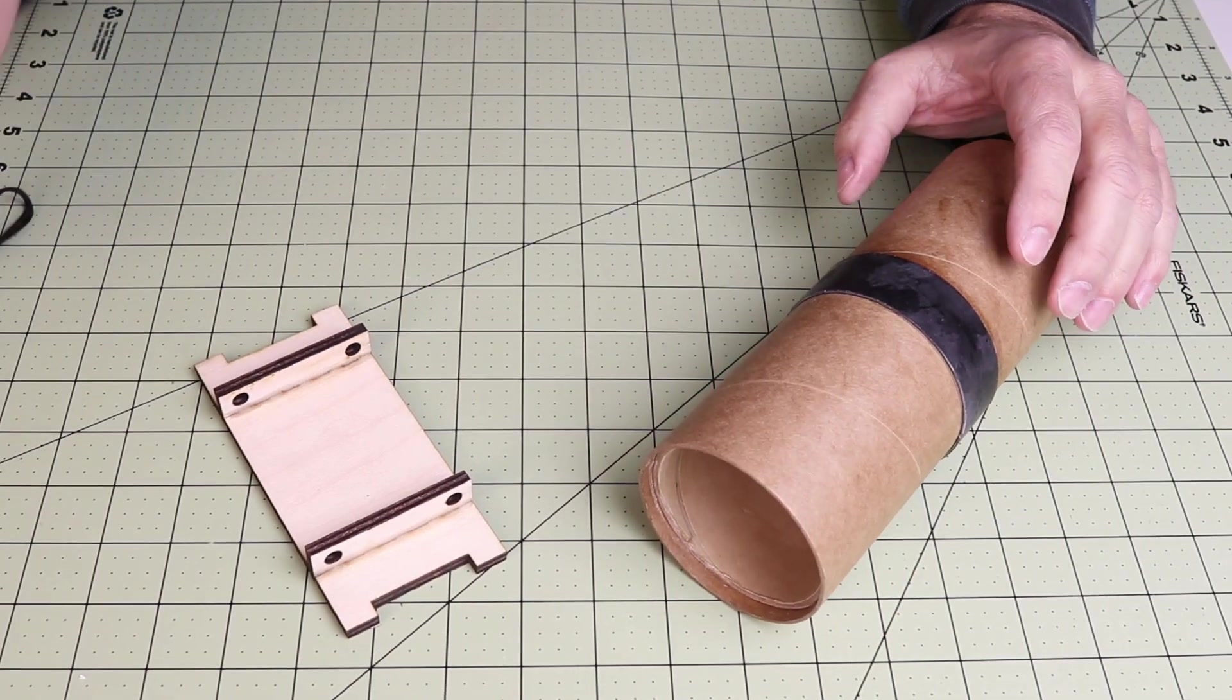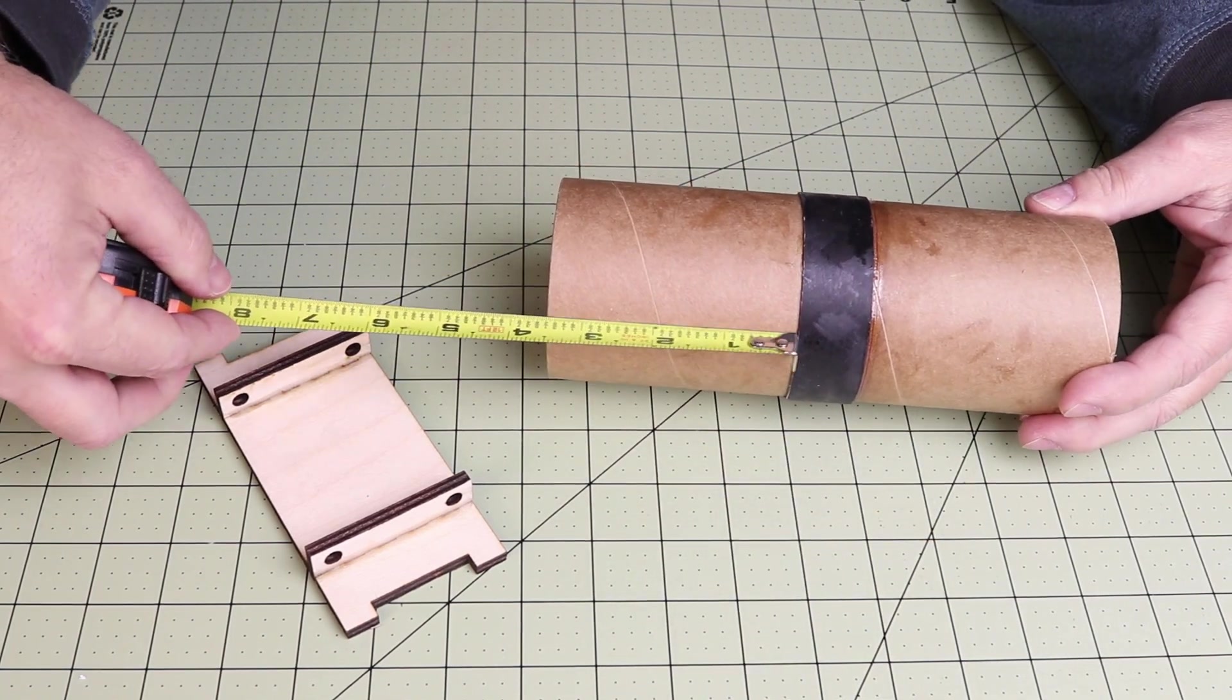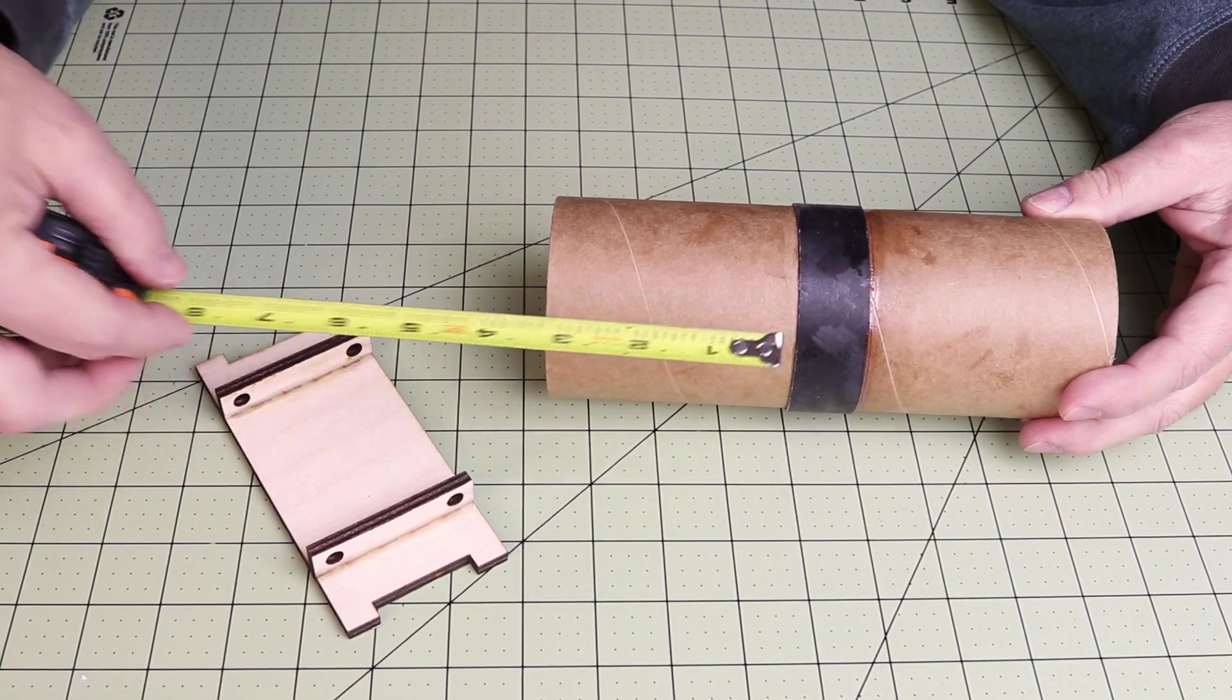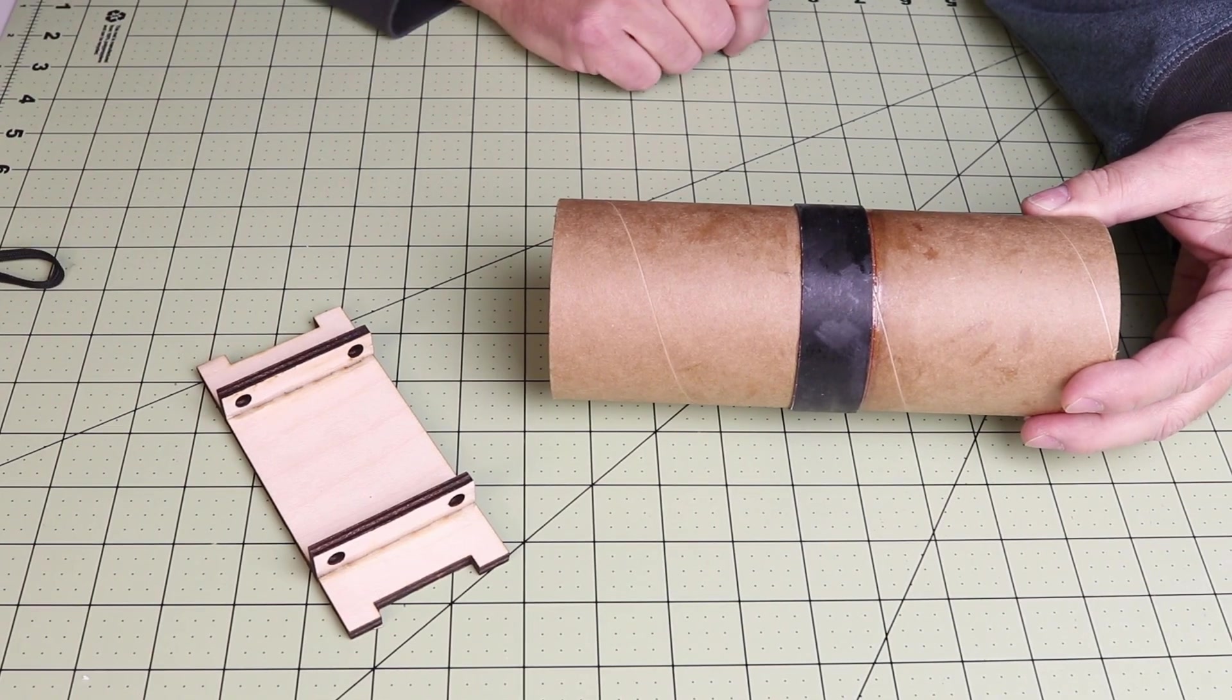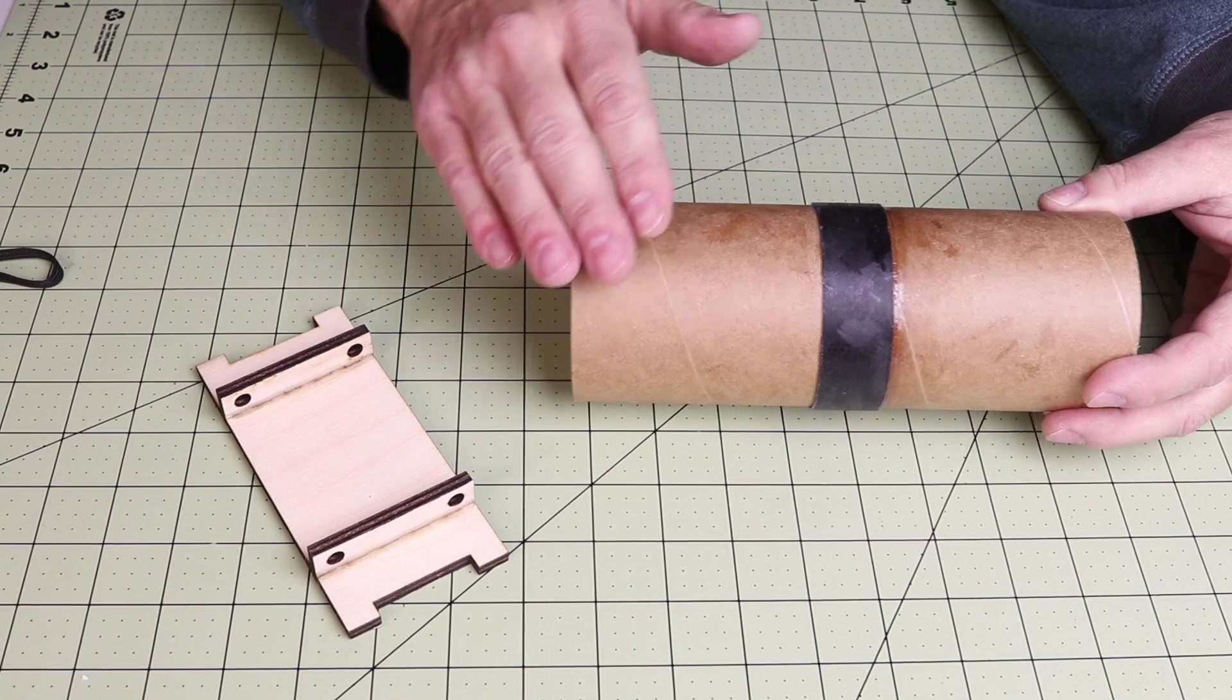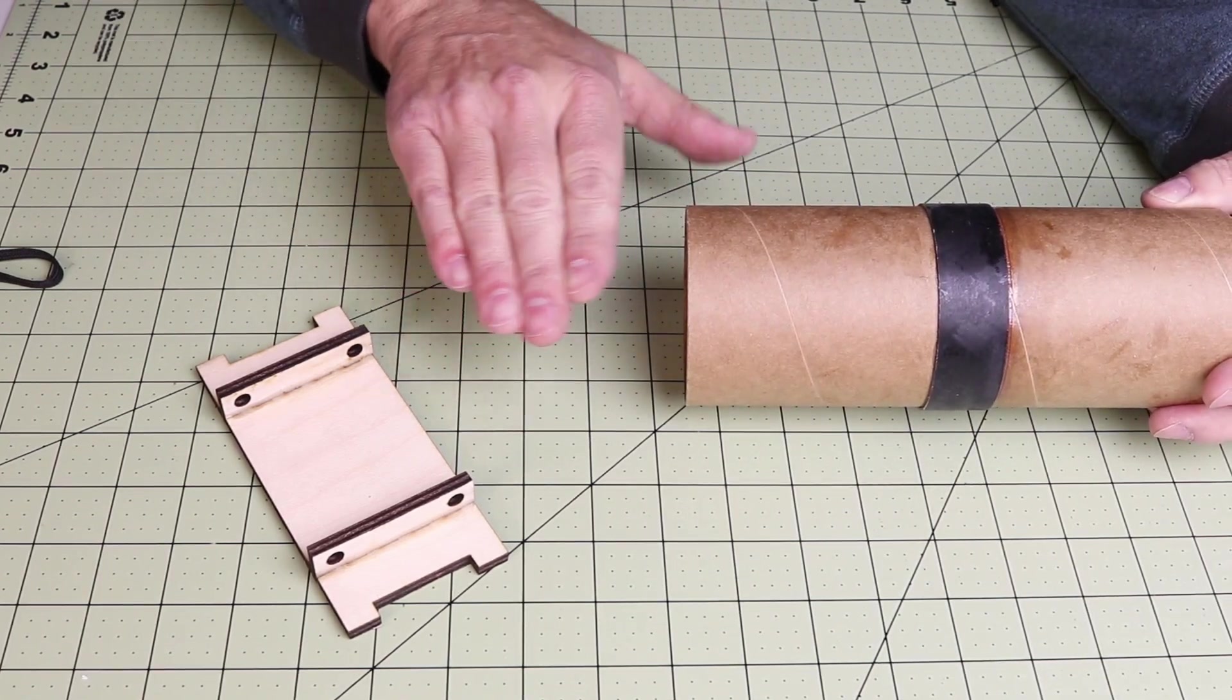One thing that you want to do before the epoxy sets up is you want to measure this to make sure that it's even all the way around. The same goes for centering rings on a motor tube or anything like that because you want to make sure that's straight because it can tend to rock and get off a little bit.